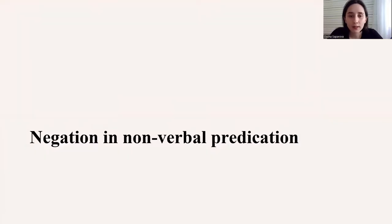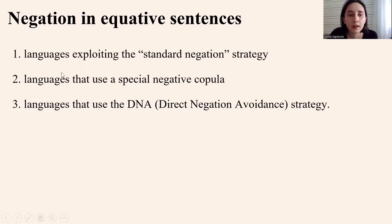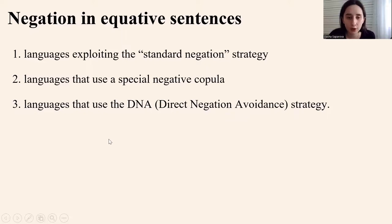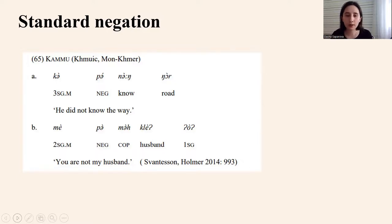Now I want to briefly discuss negation in nonverbal predications. Languages in my sample can be divided into three classes depending on how they negate equative sentences. First, languages exploiting the standard negation strategy. Second, languages that use a special negative copula. And third, languages that use a direct negation avoidance strategy. In the standard negation strategy, the copula is under the scope of the standard verbal negator, as in Kamu.